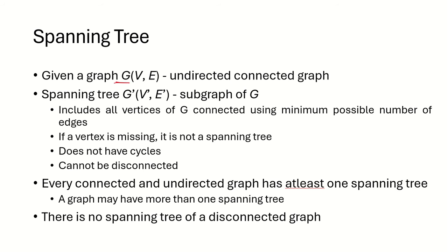Let's say we have a graph G with a set of vertices and a set of edges, and this is an undirected connected graph. The spanning tree G-dash with the set of vertices V-dash and set of edges E-dash will be a sub-graph of G. This spanning tree can be created only from an undirected connected graph — it cannot be created from a disconnected graph.